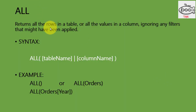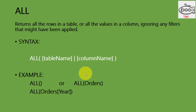ALL returns all rows in a table or all the values in a column, ignoring any filters that might have been applied. The syntax is ALL, TableName or ColumnName. If you use the table name like ALL(Orders), it will remove all the filters applied on that table. If you use ALL(Orders[Year]), it will remove all the filters applied to that specific column of the table.